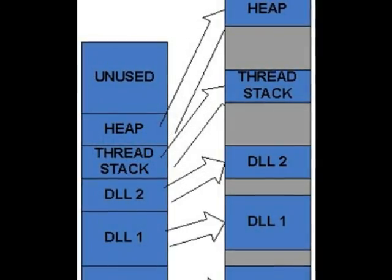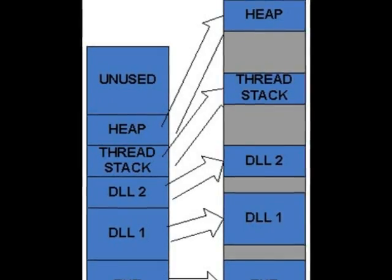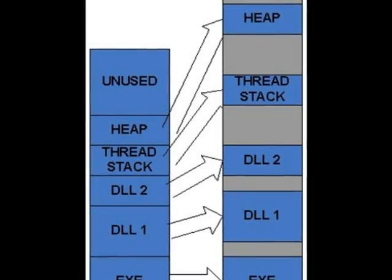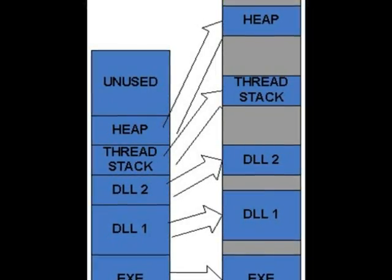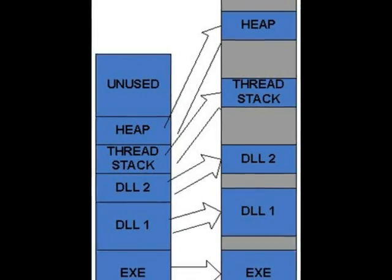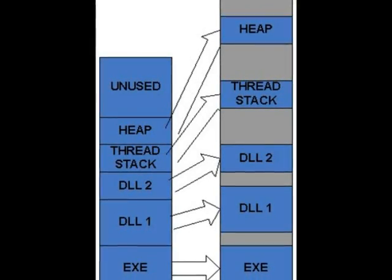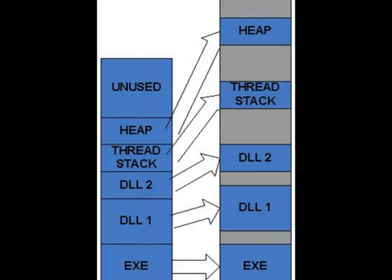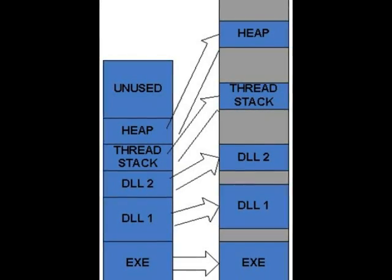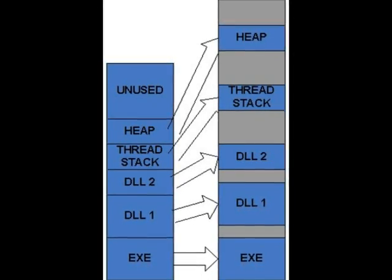Virtual memory is a mapping from the addresses that running programs are using to the addresses of physical RAM — they almost never have any correspondence to each other. Memory at a particular virtual address could come from a completely different physical address.